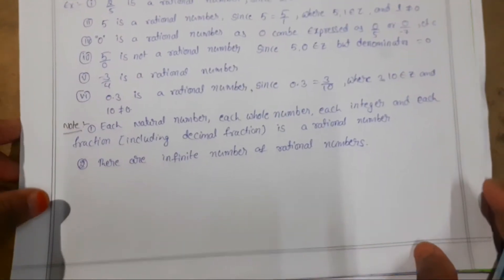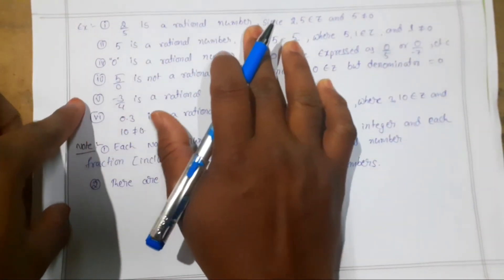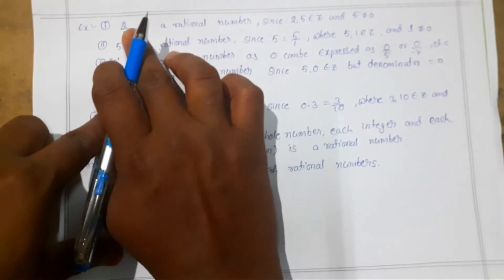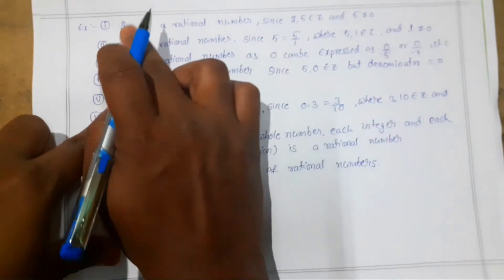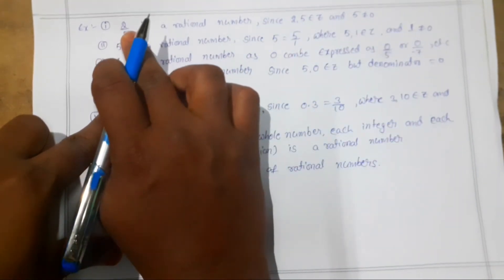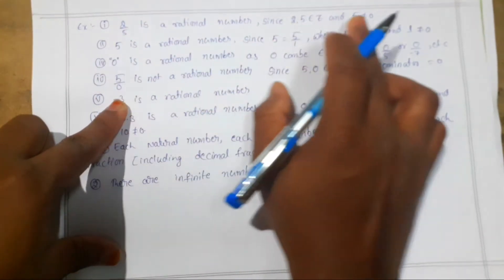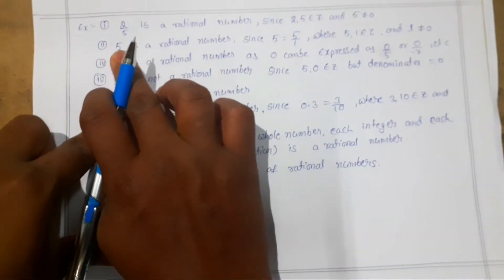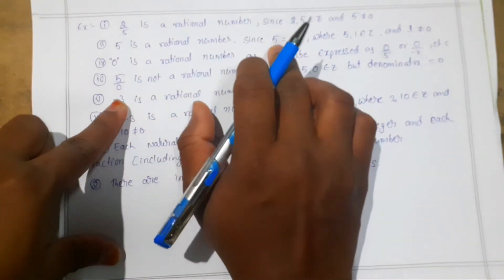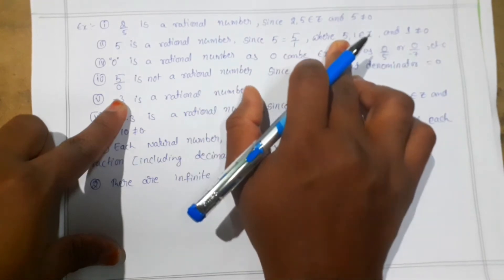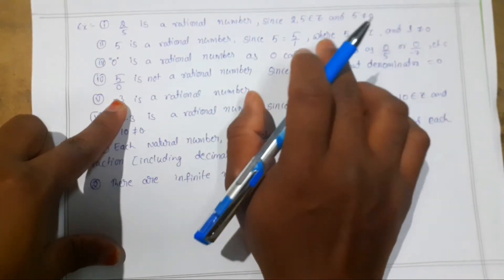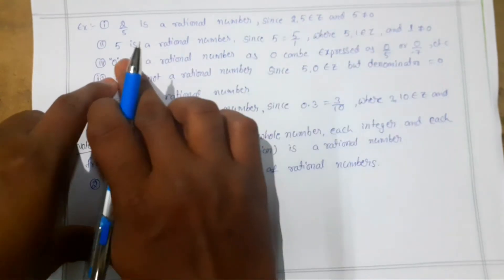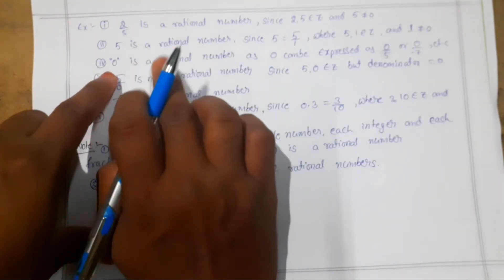Let us see a few examples. The first example: 2/5 is a rational number because 2 and 5 are both integers and 5 is not equal to zero. It is in the form p/q where p is 2 and q is 5. Also, the number 5 is a rational number because 5 can be written as 5/1, where 5 and 1 are integers and 1 is not equal to zero.